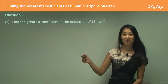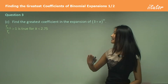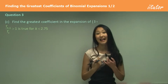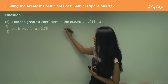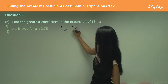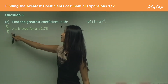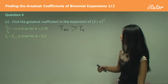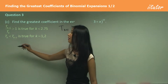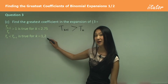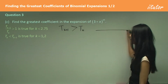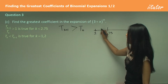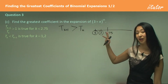Using that result, we find the greatest coefficient. For k less than 2.75, the ratio is greater than 1, which means t(k+1) is bigger than tk. Considering specific whole numbers on a number line: anything less than 2.75 gives us just 1 and 2. So we only work with the whole numbers 1 and 2.